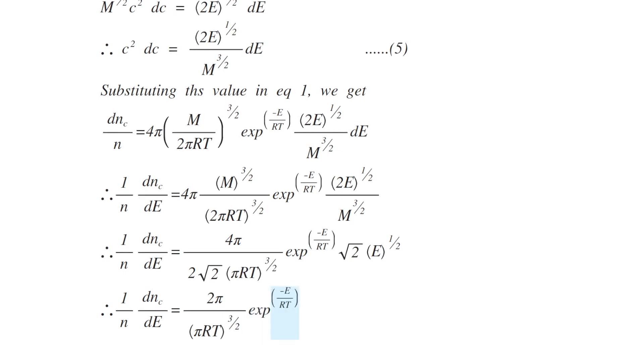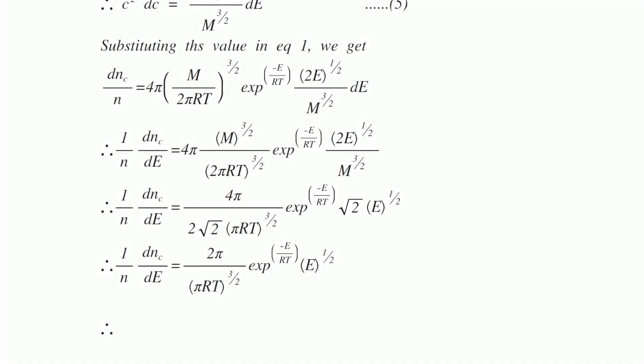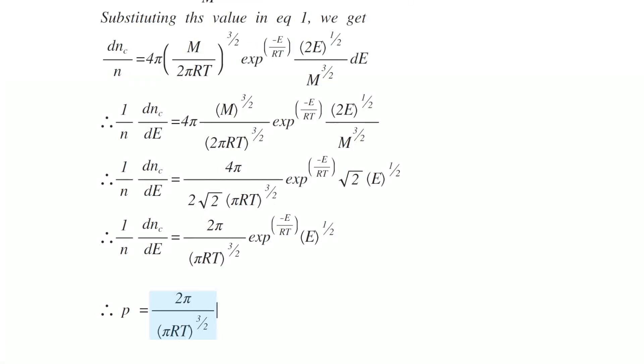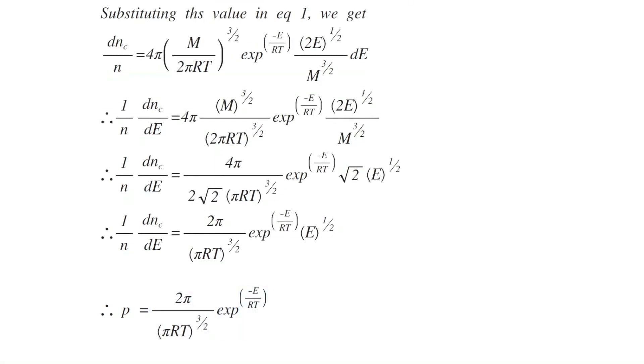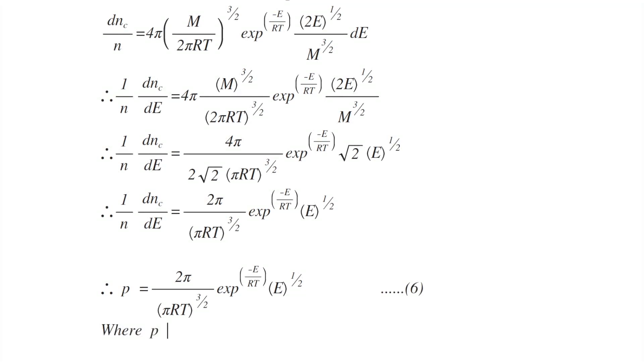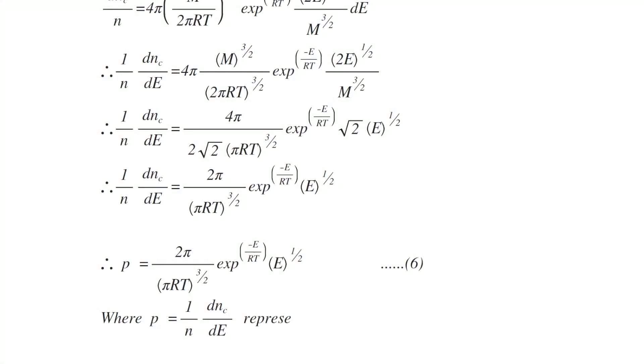So 1 by n dNc by dE becomes 2 pi divided by pi RT to the power half, power to 3 by 2, exponentially minus E by RT, E to the power half. This is equivalent to P, the probability function of the molecule, which equals 1 by n dNc by dE in terms of energies.